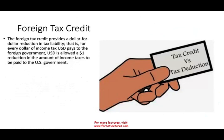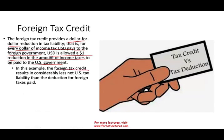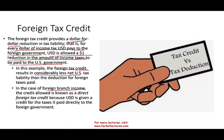The foreign tax credit provides a dollar-for-dollar reduction: for every dollar of income taxes paid to the foreign government, the company is allowed a dollar reduction in income taxes paid to the U.S. government. You paid $15,000, so you get a credit of $15,000 — subject to a limitation we'll discuss shortly. In this example, the foreign tax credit results in considerably less U.S. tax liability than a deduction. In the case of foreign branch income, this is called a direct foreign tax credit, because the company is given credit for taxes it paid directly to the foreign government.